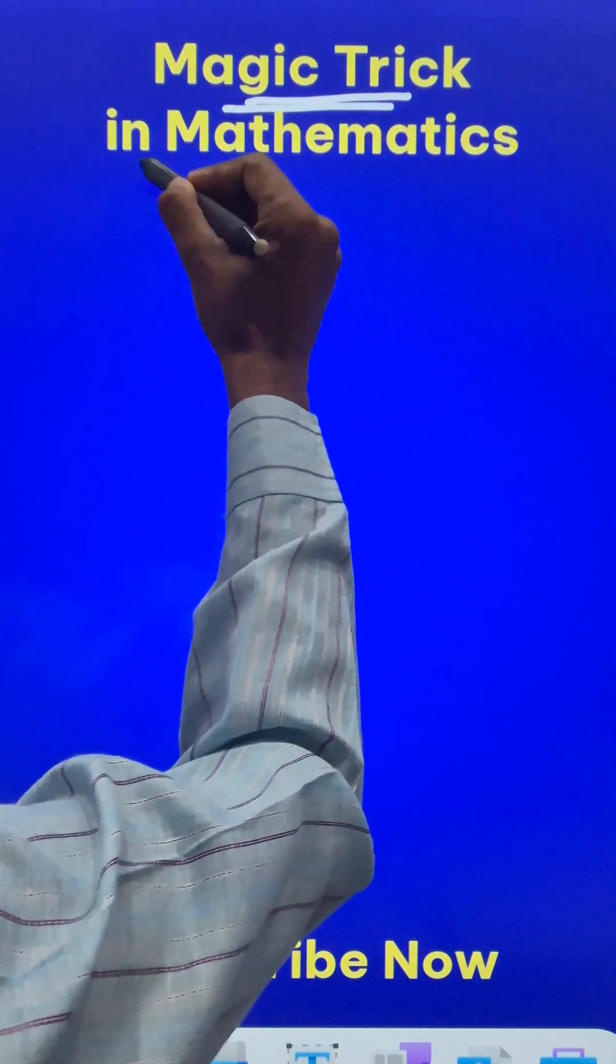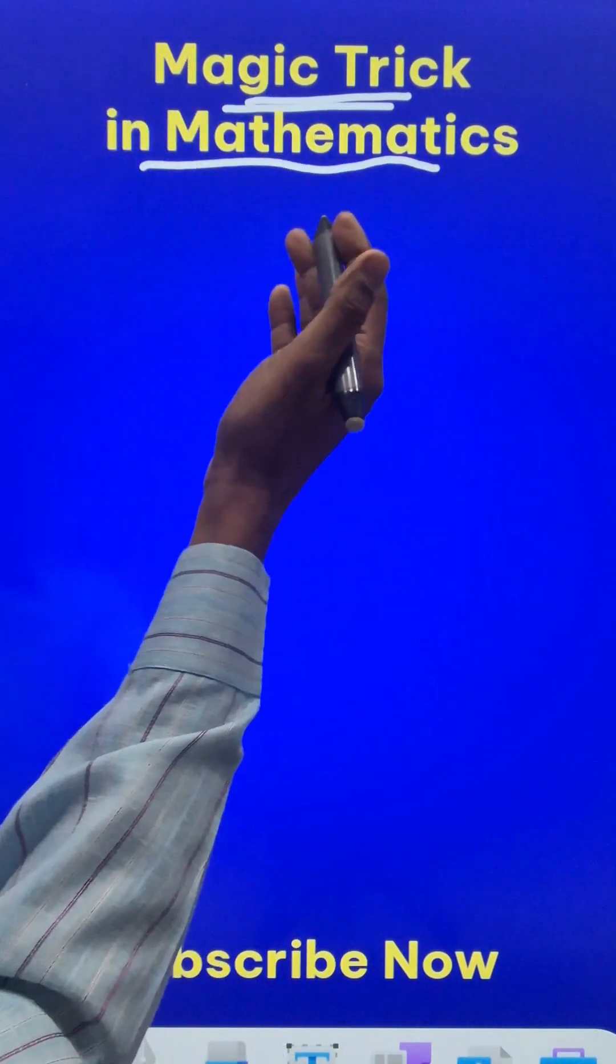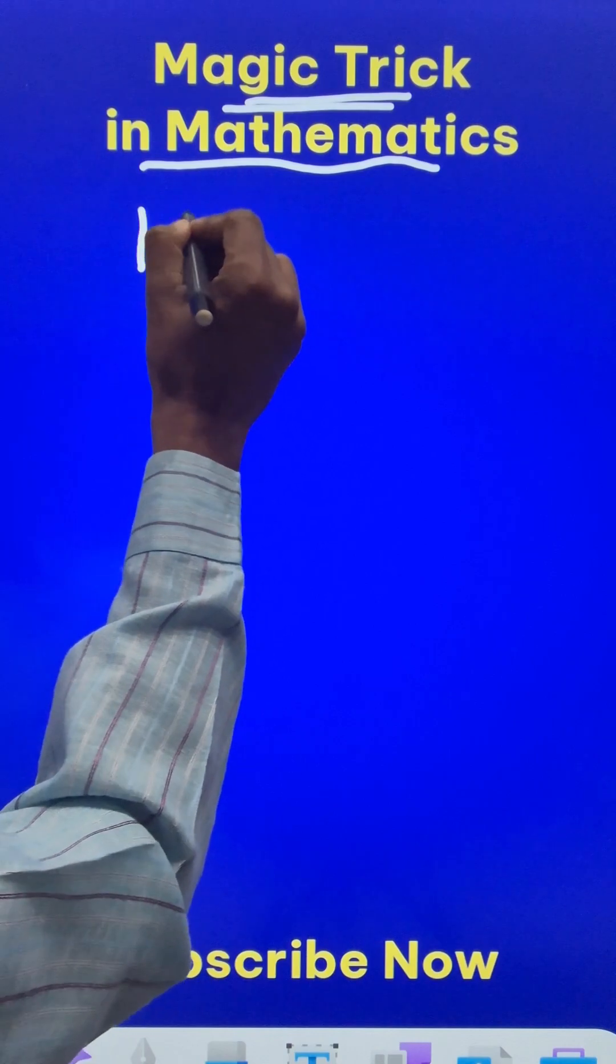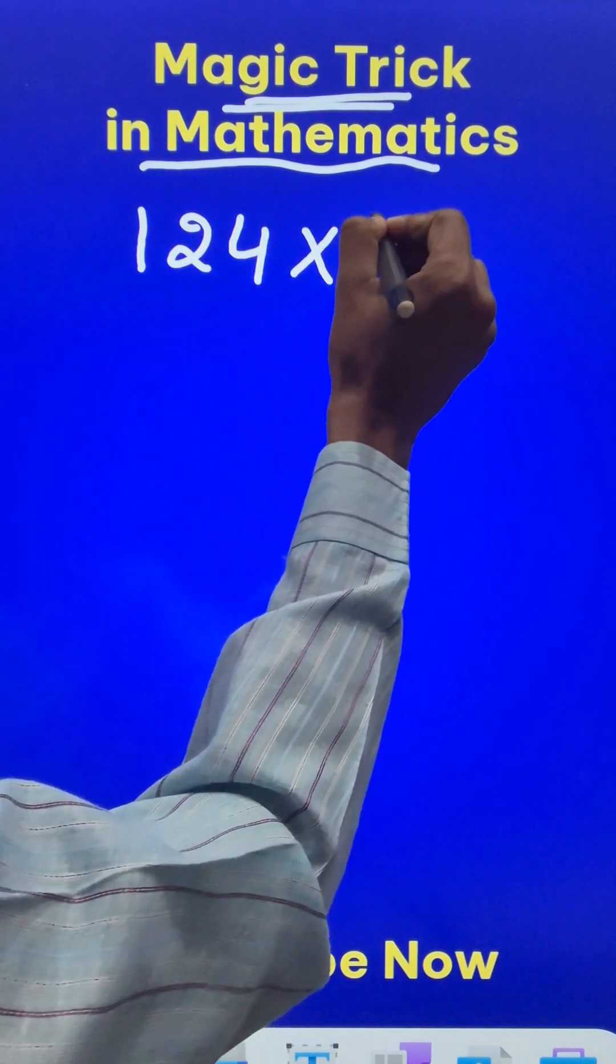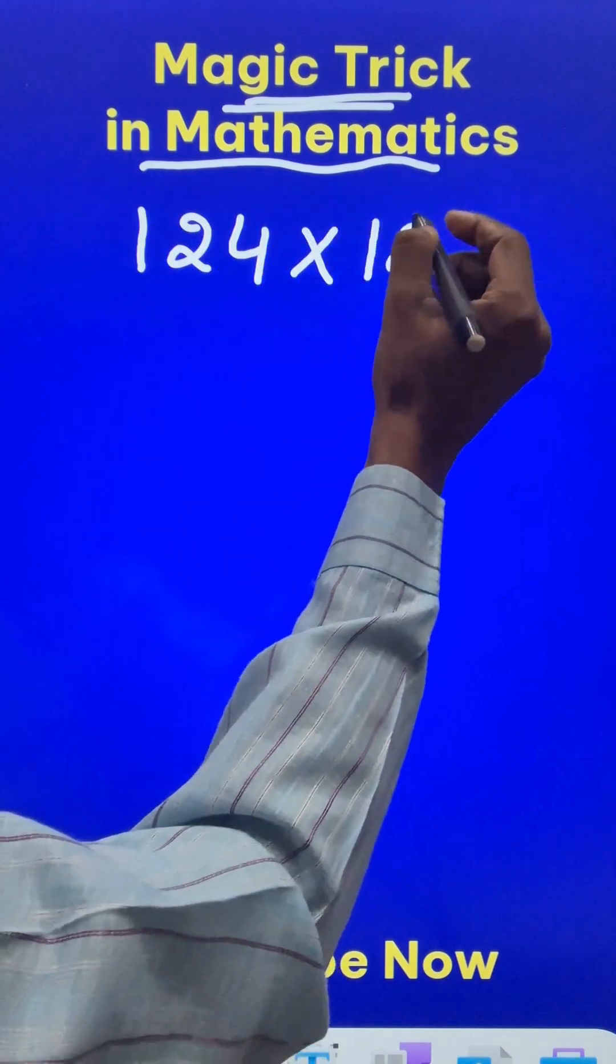Here is a magic trick in mathematics to multiply three-digit numbers. Suppose you have a number like 124 and you need to multiply that by another number, say 128.